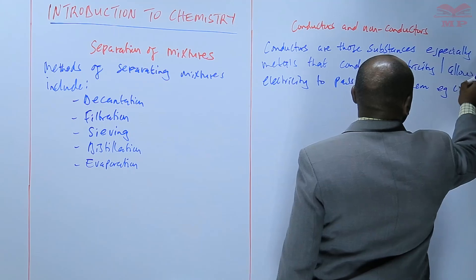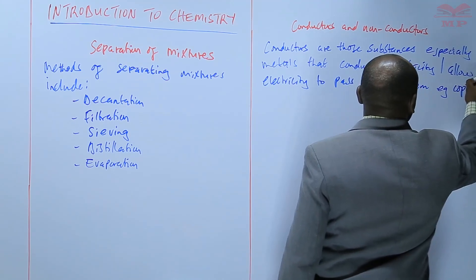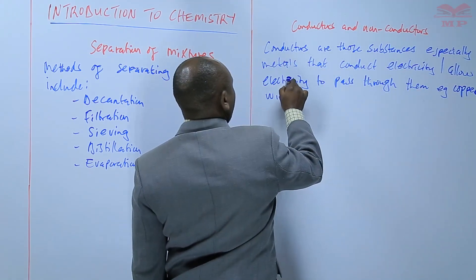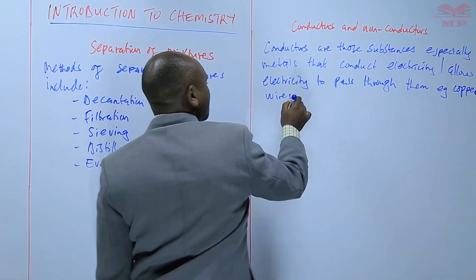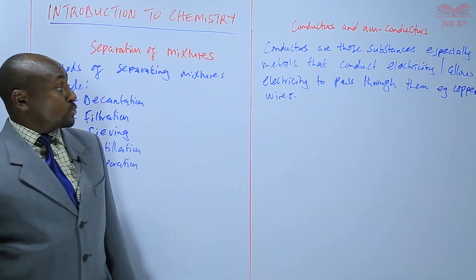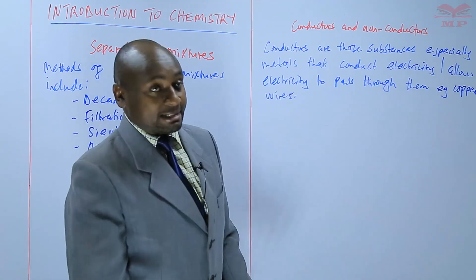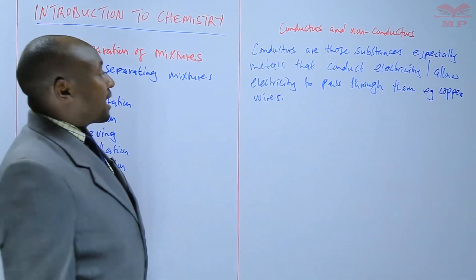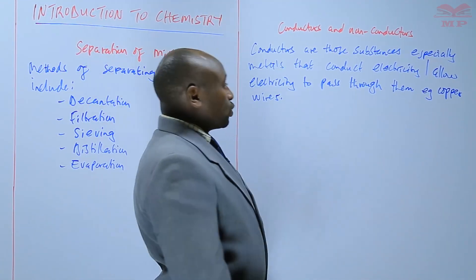For example, copper wires. We use copper wires in electricity because those copper wires are conductors. They can allow electricity to pass through them.